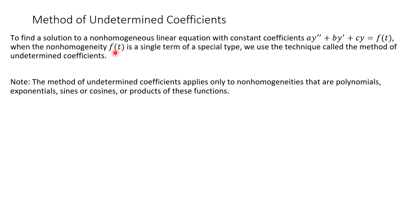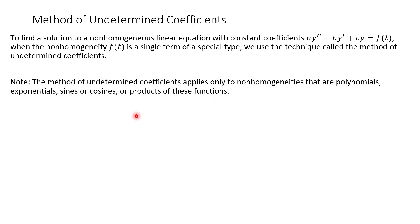We call f(t) the non-homogeneity term — it's a single term of a special type. When this is the case, we use a technique called the method of undetermined coefficients. A quick note: this method is only going to work for non-homogeneities that look like polynomials, exponentials, sines and cosines, or products of these. We're finding a particular solution — there are lots of solutions, but we're just finding a particular one for each example.